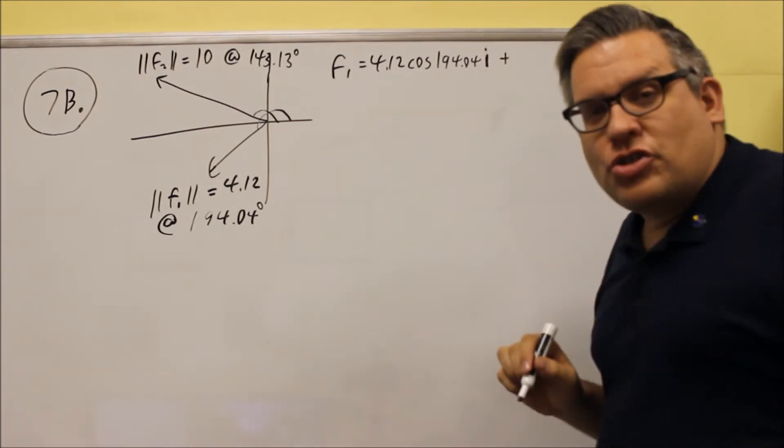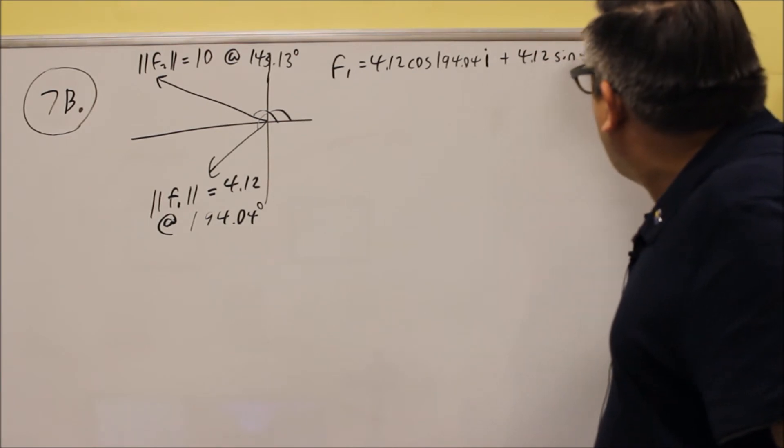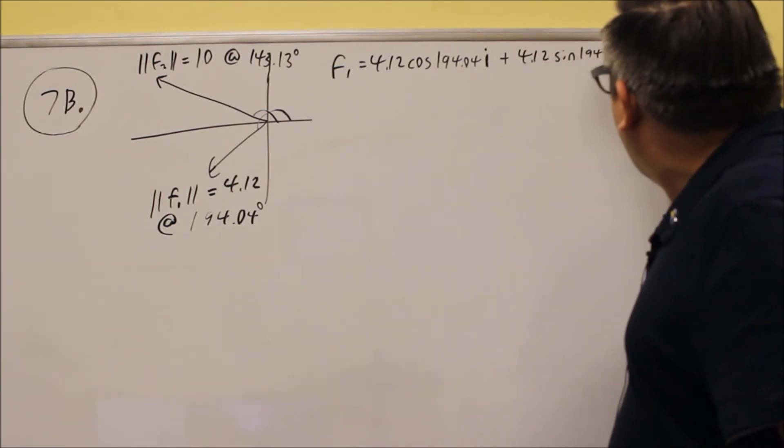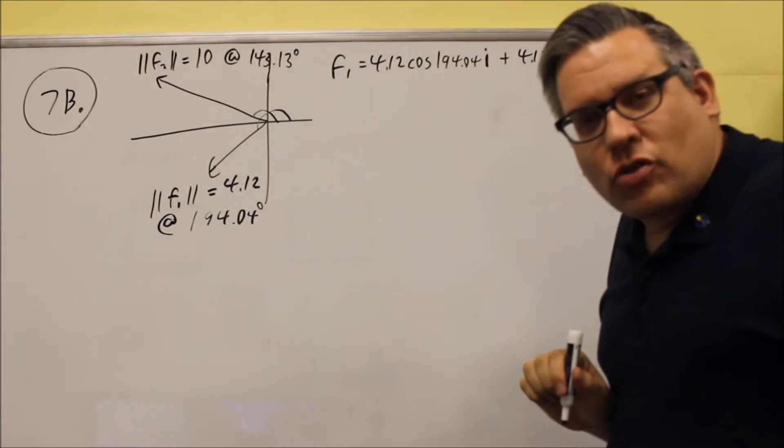And then for the j component, we need to use sine. So we're going to do 4.12 sine of 194.04, and that's going to be j. So that's how you would write out the first force.